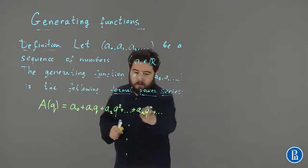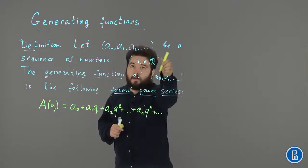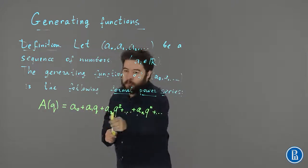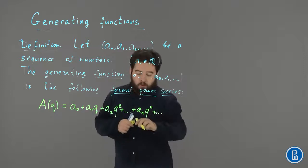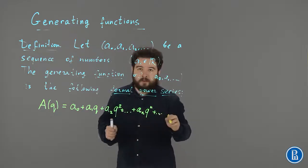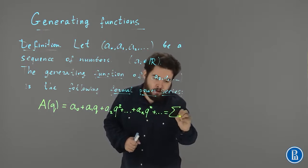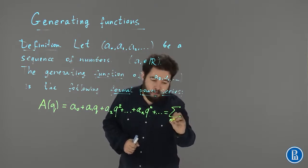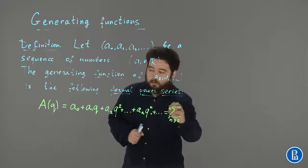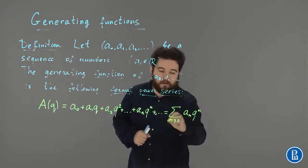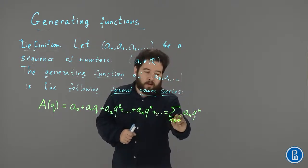So, well, this sequence can be infinite. So this expression is not a polynomial. It is a formal power series. We'll speak about formal power series in a minute. And we can use a shorthand notation. Capital A of Q is the sum of A_N*Q to the power N, for N greater than or equal to 0.